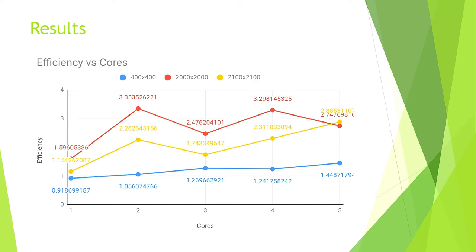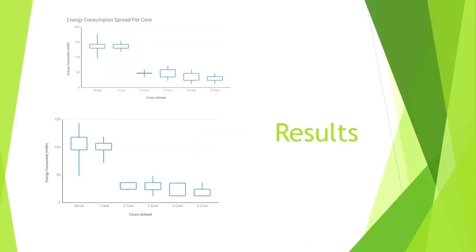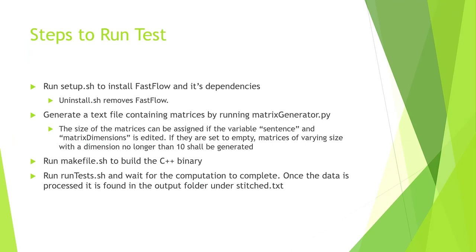There seems to be a pattern with both the 2,000 and 2,100 matrices where efficiency goes up and then down repeatedly. If we were to extrapolate, the red line would likely go up and the yellow line would go down. It is strange how the 400x matrix efficiency increases where both the 2,000-size matrices decrease. Here we have the energy consumption spread per core, showing that the energy consumption of the serial and one-core parallel algorithm is much higher than the parallel algorithms.